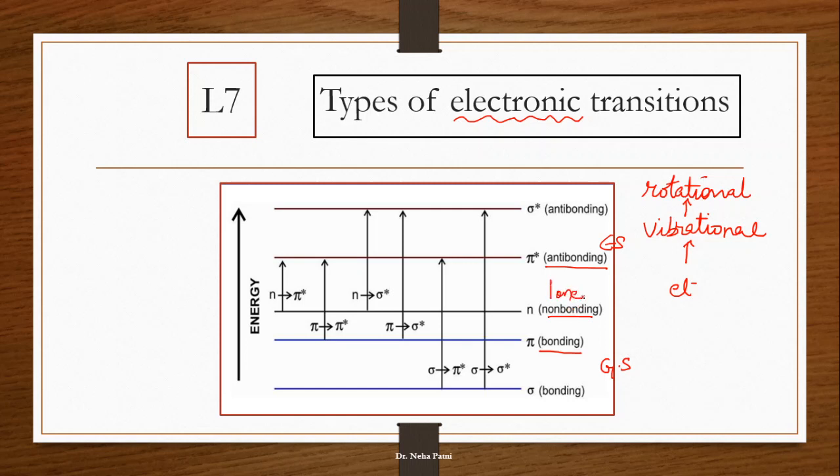You may call like lone pair of electrons in this particular non-bonding case. So here you can see that there are variety of transitions possible and in UV light we are majorly focused on π to π* and n to π* transitions. As you can see that it requires that much energy which is comparatively less and the wavelength is more.